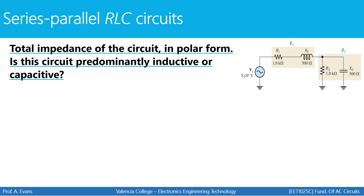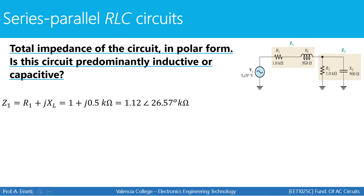We're going to start with total impedance in polar form. To begin, we calculate Z1, the series combination of R1 and XL. To combine a resistor in series with an inductor, we do R plus jXL. We take the resistance value and the inductive reactance value, which is given in the diagram — XL is provided — and combine them to find Z1. Once you have Z1, convert it to polar form.